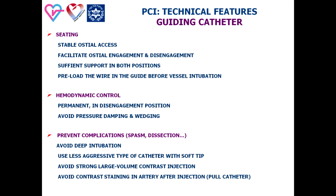PCI in ostial left main coronary artery stenosis is technically challenging for several reasons. The first is related to the guiding catheter. Ostial engagement of the guiding catheter could completely obstruct a narrow left main, terminate coronary blood flow, and result in global ischemia, hypotension, and arrhythmia. Ostial engagement can also lead to plaque shifting, spasm, dissection, and obstruction. The operator must use a less aggressive catheter, predominantly with a soft tip, avoid deep intubation, and avoid strong, large-volume contrast injections.